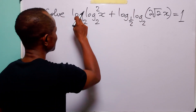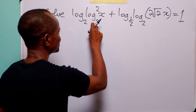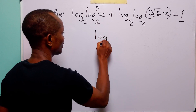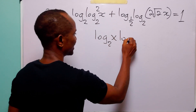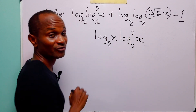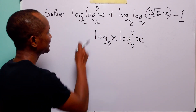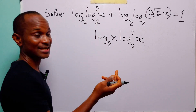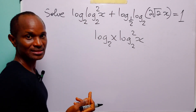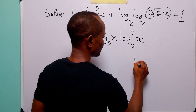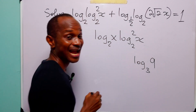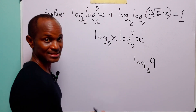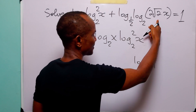Note that log to base 2 of log to base 2 squared of x is not the same as log to base 2 multiplied by log to base 2 squared of x. In this case, log to base 2 squared of x is the object on which log to base 2 is acting, just like when we have log to base 3 of 9, where 9 is the object on which log to base 3 is acting.